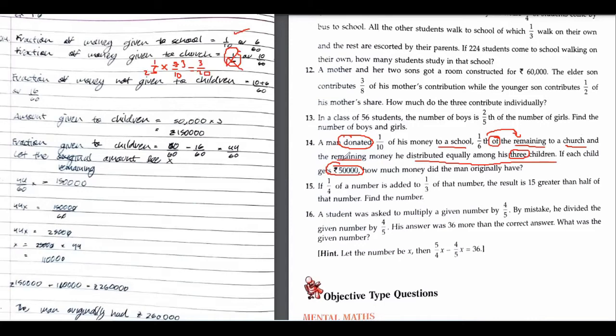Now, the second part. The remaining he distributes equally among three children. Remaining. So how much has he distributed as of now? He has distributed 15 upon 60. One upon 10 has been given to the school and three by 20 has been given to the church. That much has been distributed. So let me just rewrite. Two upon 20 plus three upon 20. That means five upon 20, he has distributed already.